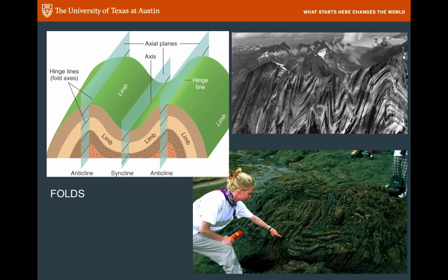It's useful to define folds and to be able to measure particular properties on folds because folds can be quite different. We define a few things about folds, and you can see in this diagram in the upper left some of the terminology we use. The limbs of the folds are the sides that are tilted in one direction or another. The hinge is the area where that direction of tilt changes. The limbs on one side of the hinge are dipped in one direction, and the limb on the other side is dipped in the other direction. So the hinge is the line where that change of dip happens, and you can say there's no dip there.